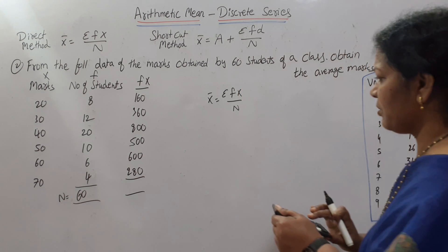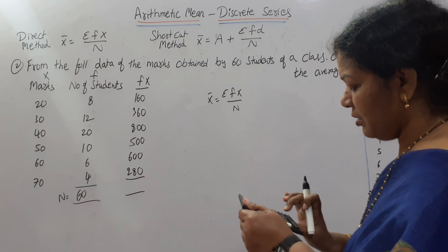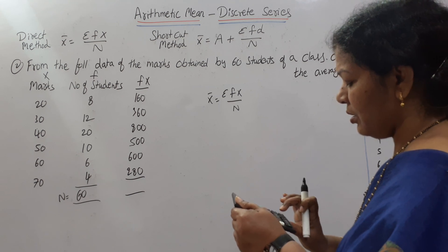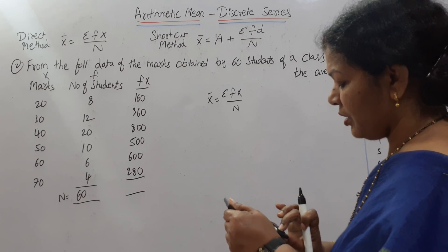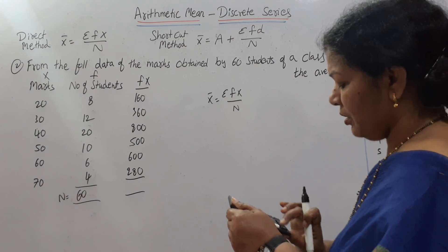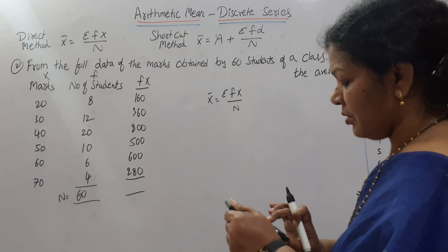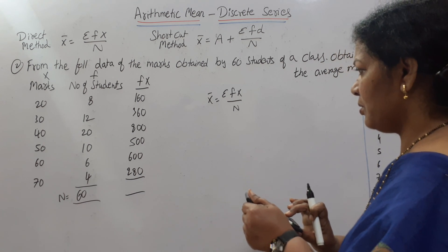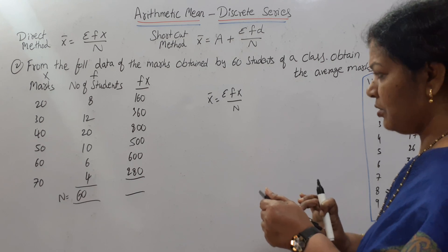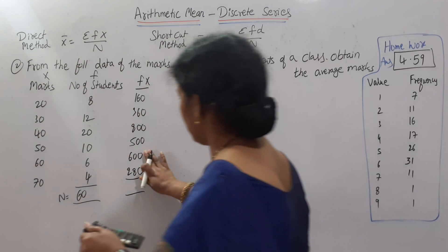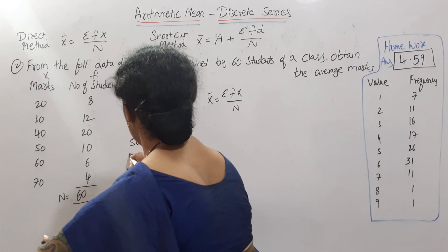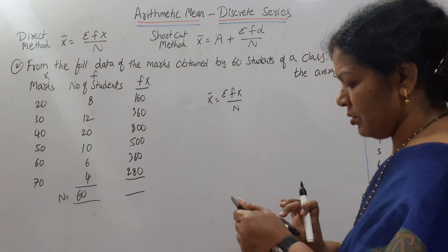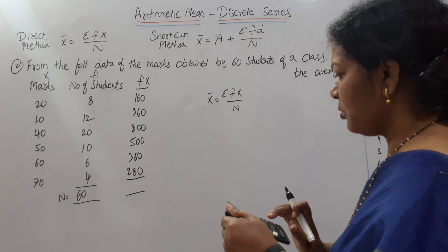Let me check the FX values again: 20 × 8 = 160, 30 × 12 = 360, 40 × 20 = 800, 50 × 10 = 500, 60 × 6 = 360, 70 × 4 = 280. After rechecking, the correct total is ΣFX = 2460.